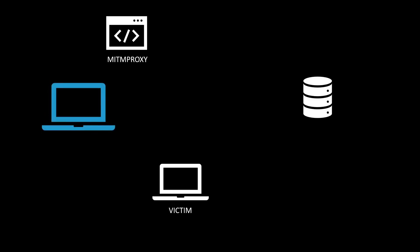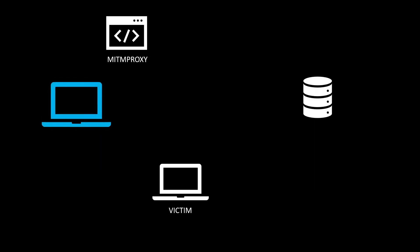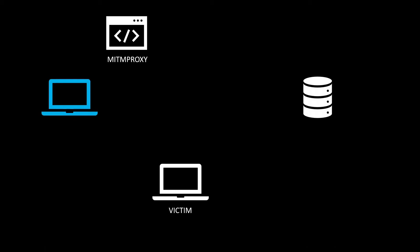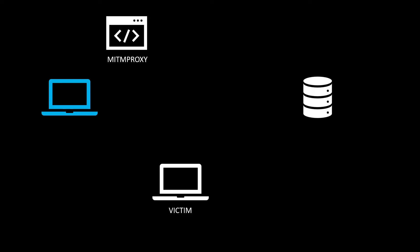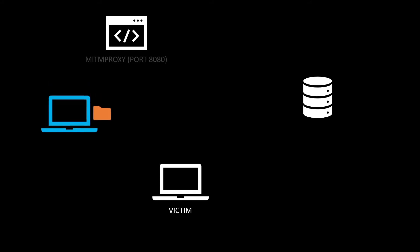The first step is to become the man in the middle in the network. You can either use Ettercap or Bettercap, but in this video we are going to be using Bettercap. Now as soon as we become the man in the middle, all the requests that the victim sends to the server will be redirected to our own machine. The catch is that all HTTP requests come at port 80 and MITM proxy works at port 8080.